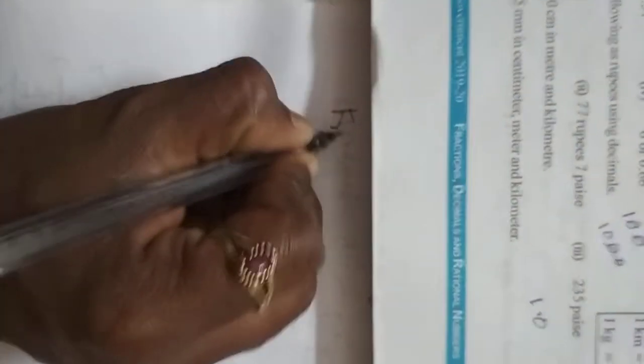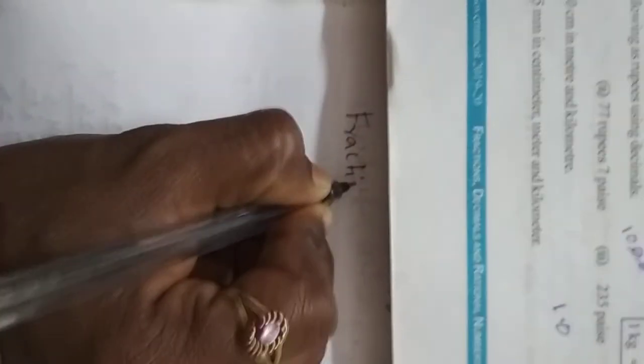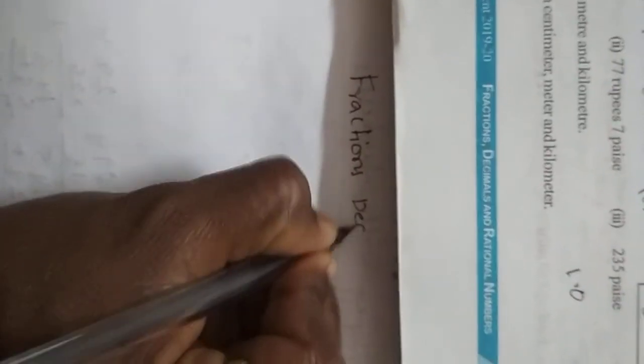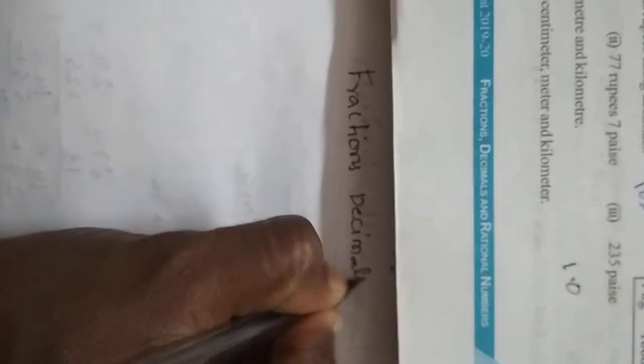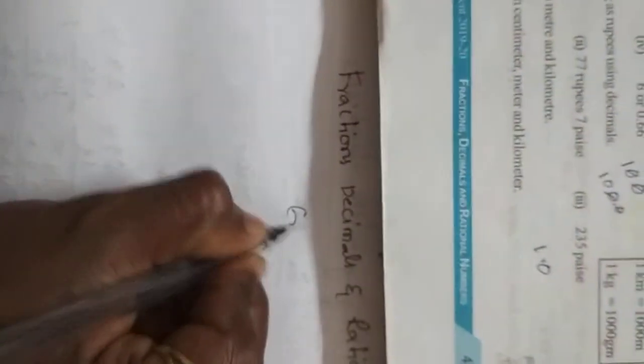Good morning students, we will continue our chapter on fractions, decimals and rational numbers. In this we will discuss exercise 5. First bit is which one is greater: 0.7 or 0.07?